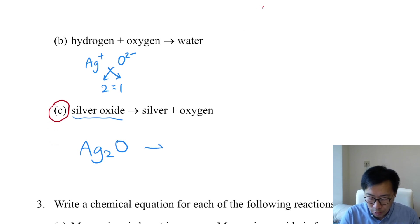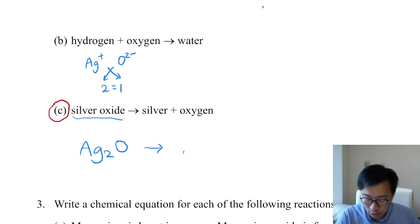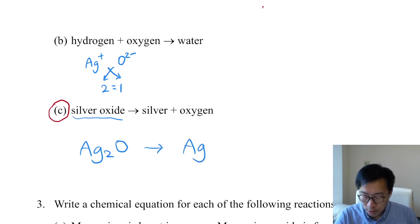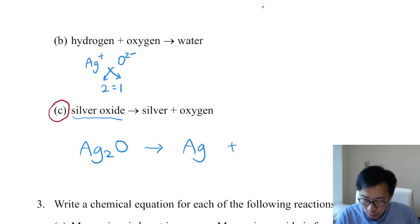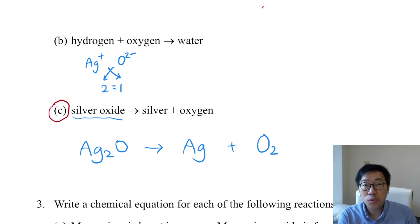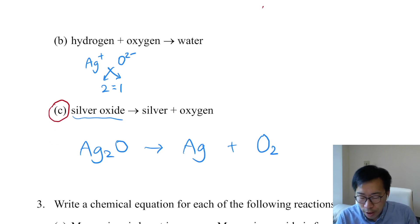On the right-hand side: silver — it is a metal, so you write the chemical symbol Ag. Oxygen — is it a metal or non-metal? It is a non-metal, and it is a covalent non-metal, so you have to write the molecular formula O2. First of all, you must get all these formulas and chemical symbols correct.